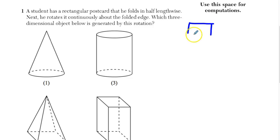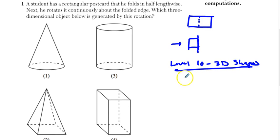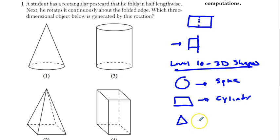A student has his rectangular postcard, and he folds it in half. When he folds it in half, he gets something that probably looks pretty rectangular still. And then he rotates it along this folded path. So what you're basically doing is rotating a rectangle. What we have to do is recall what we learned in level 10, and that was 3D shapes. We know how to rotate a circle, we know how to rotate a rectangle, and we know how to rotate a triangle. When you rotate a circle, the three-dimensional shape is a sphere. When you rotate a rectangle, the three-dimensional shape is a cylinder. And when you rotate a triangle, the three-dimensional shape is a cone. Obviously, since we are rotating a rectangle here, we are going to get number three, a cylinder.